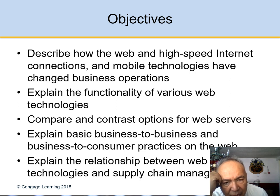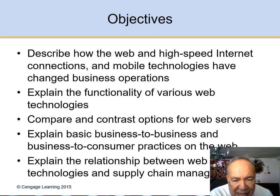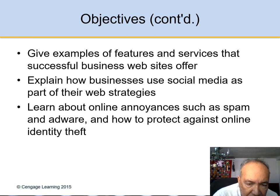These are the objectives. We talk about the internet — how the web, high-speed internet connections, and mobile technologies have changed business operations. We explain the functionality of various web technologies, compare and contrast options for web servers, and explain business-to-business and business-to-consumer practices on the web. We also explain the relationship between web technologies and the supply chain.